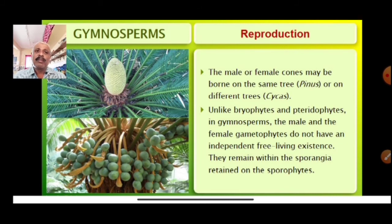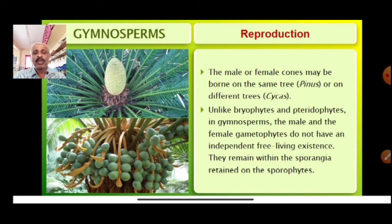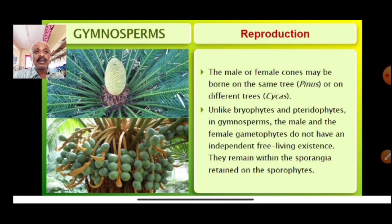The male and female cones may be borne on the same tree or on different trees. Unlike bryophytes and pteridophytes, in gymnosperms the male and female gametophytes do not have an independent free-living existence — they remain within the sporangia retained on the sporophyte.